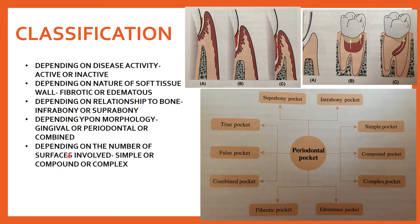The last classification is depending on the number of surfaces involved. It can be simple — only one surface involved; compound — two surfaces involved; or complex, also known as spider — originating on one surface and twisting around the tooth to involve one or more additional surfaces. Complex pockets are most commonly found in the furcation area.